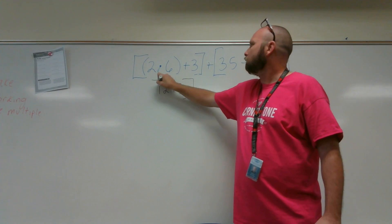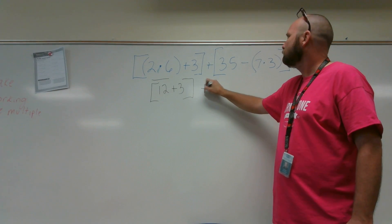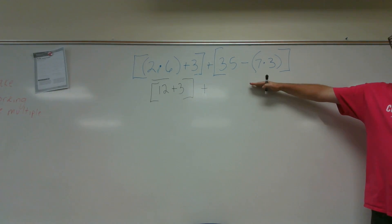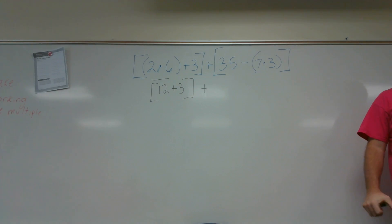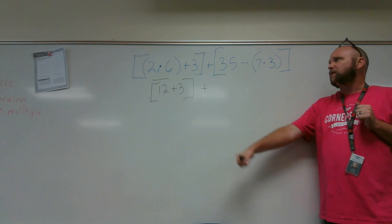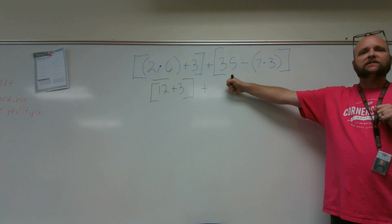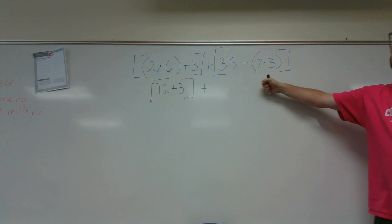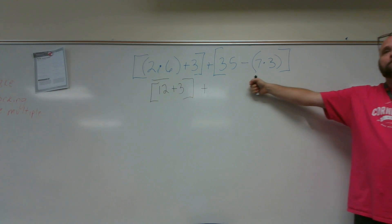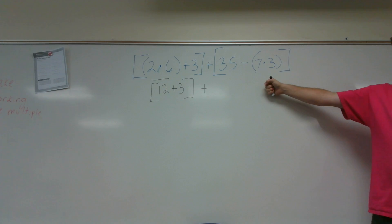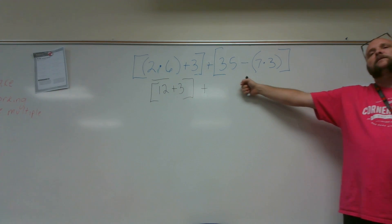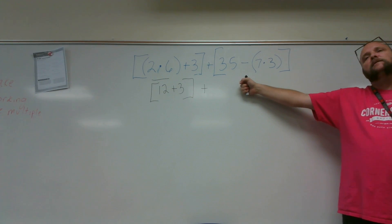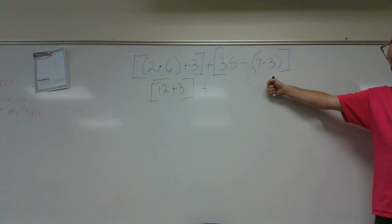That is what I have in my brackets now. Now I do the second set of brackets. Benjamin, looking at this second set of brackets, what do I do first? I do inside the parentheses first — 35 minus 7 times 3. Good. I want to find the product of 7 and 3 and subtract that from 35.